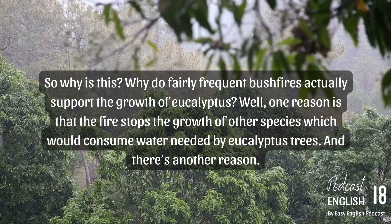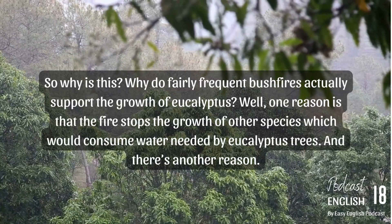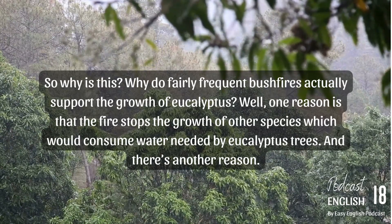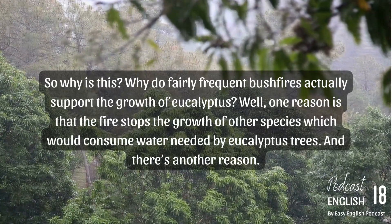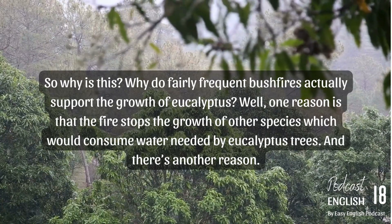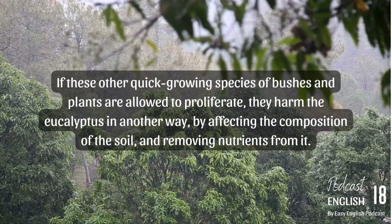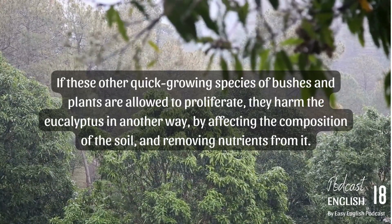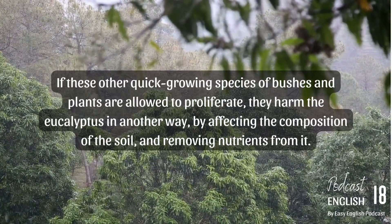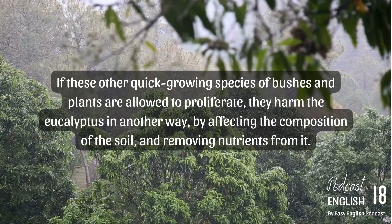So why is this? Why do fairly frequent bushfires actually support the growth of eucalyptus? Well, one reason is that the fire stops the growth of other species which would consume water needed by eucalyptus trees. And there's another reason: if these other quick-growing species of bushes and plants are allowed to proliferate, they harm the eucalyptus by affecting the composition of the soil and removing nutrients from it.